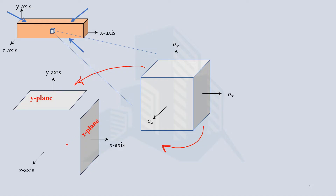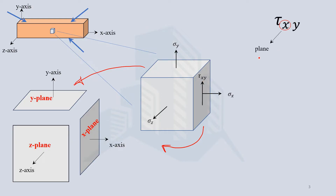The plane normal to the z-axis is the z-plane. The shear stress acting on the x-plane in the y direction is represented as tau x-y, where x is the plane and y is the direction. Similarly, the shear stress on the x-plane in the z direction is tau x-z. For the y-plane there is tau y-x and tau y-z, and for the z-plane there is tau z-x and tau z-y.